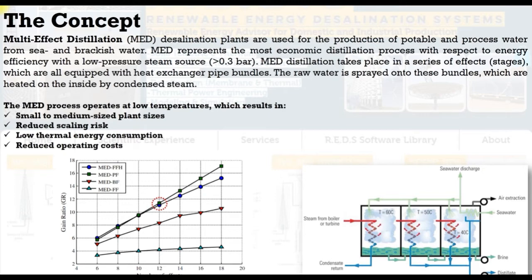We have forward feed configuration, backward feed, and forward feed with heaters. Parallel feed can achieve a higher gain ratio compared with forward feed heaters, forward feed configuration, and backward feed configuration, and it achieves more economical use related to thermal desalination systems.